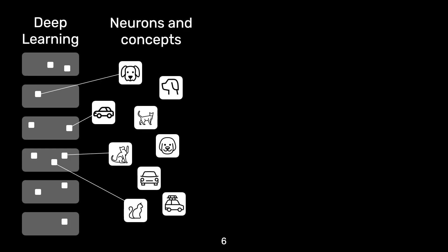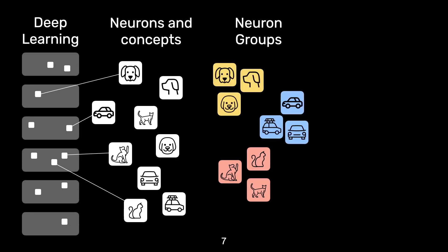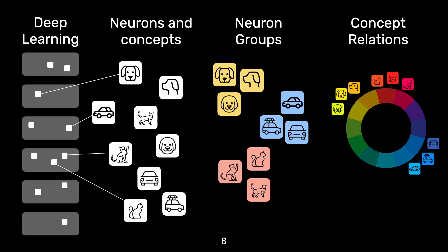To understand how a deep learning model works, NeuroCartography automatically discovers concepts represented by neural networks and finds which neurons can detect such concepts. NeuroCartography groups the neurons based on semantic similarity of their concepts to provide better organized interpretation. Also, NeuroCartography shows the relationships between the concepts of the neuron groups to provide a global view of the concepts learned by deep learning models.